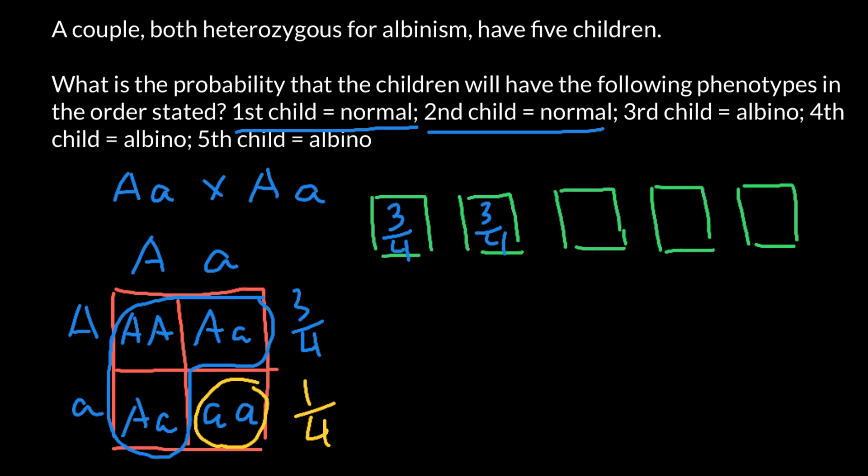Third child is albino, so probability is one quarter. Every time this couple conceives a child, they would have the following probabilities: whether the child would be phenotypically normal or would be albino. Fourth child is albino, so probability is one quarter. And the last child is also albino, so let's put one quarter here.